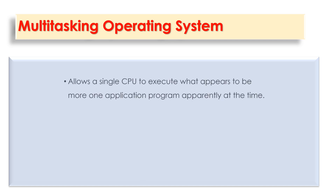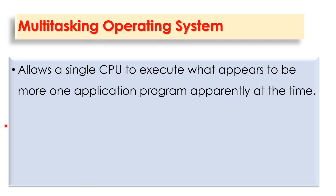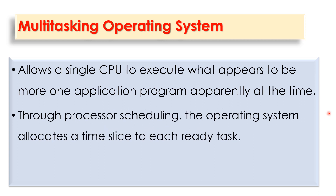The second type according to tasks is the multitasking operating system. This allows a single CPU to execute what appears to be more than one application program at a time. For example, you can be playing music, typing a document, and opening other documents simultaneously. Through processor scheduling, the operating system allocates a time slice to each ready task.